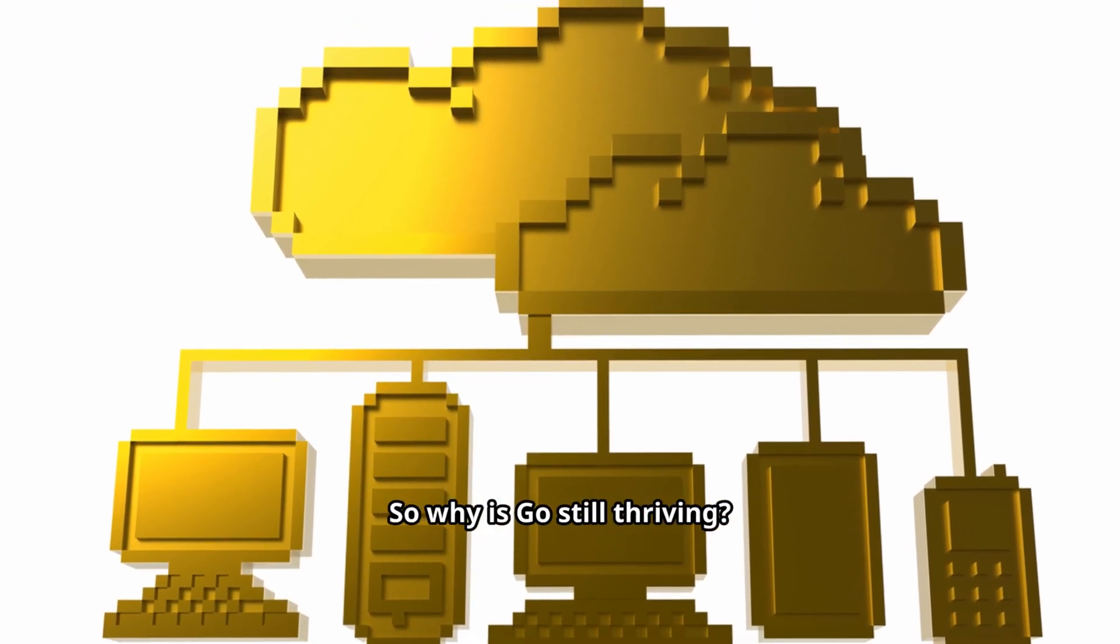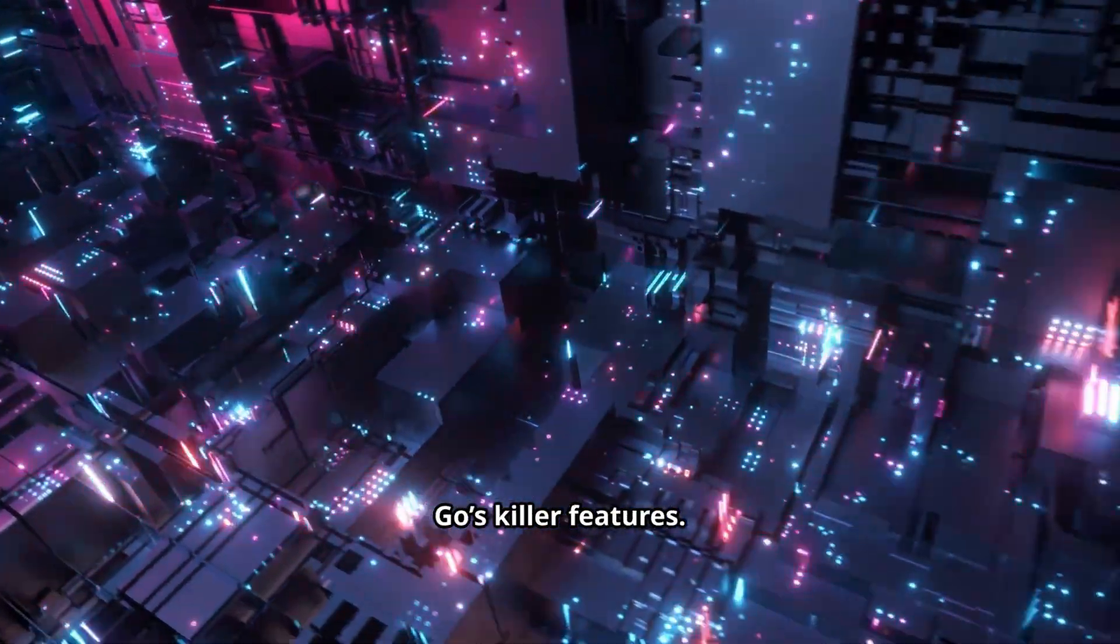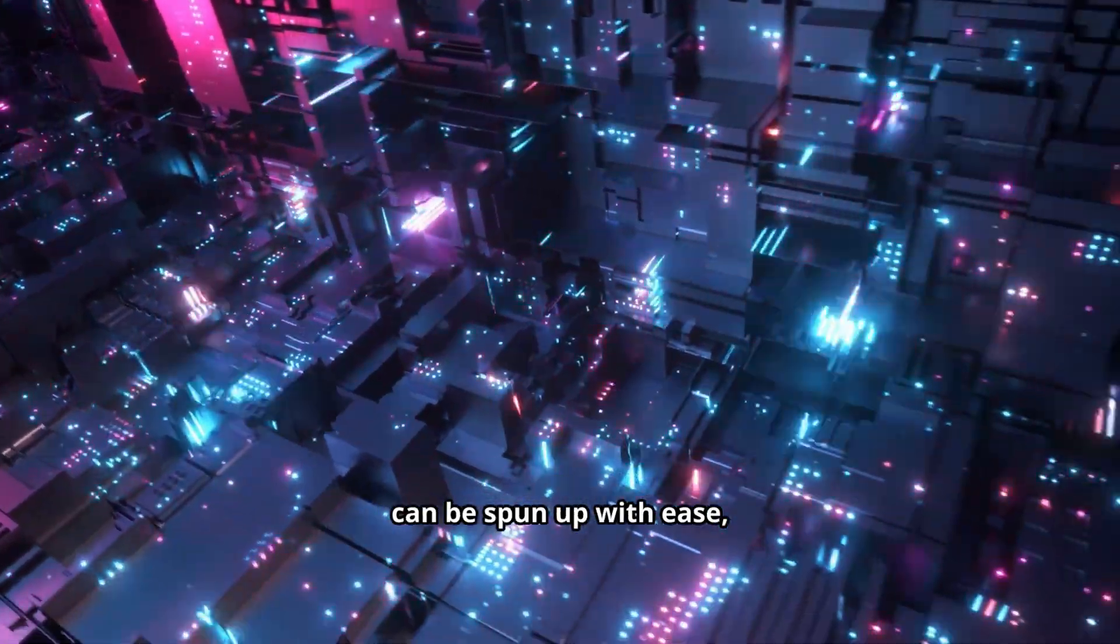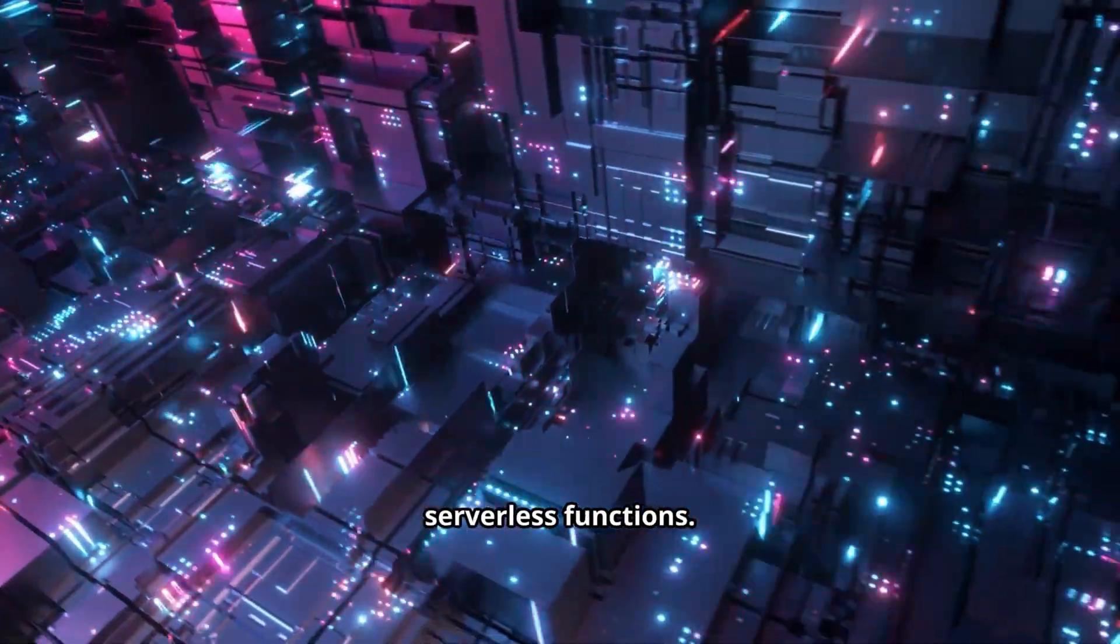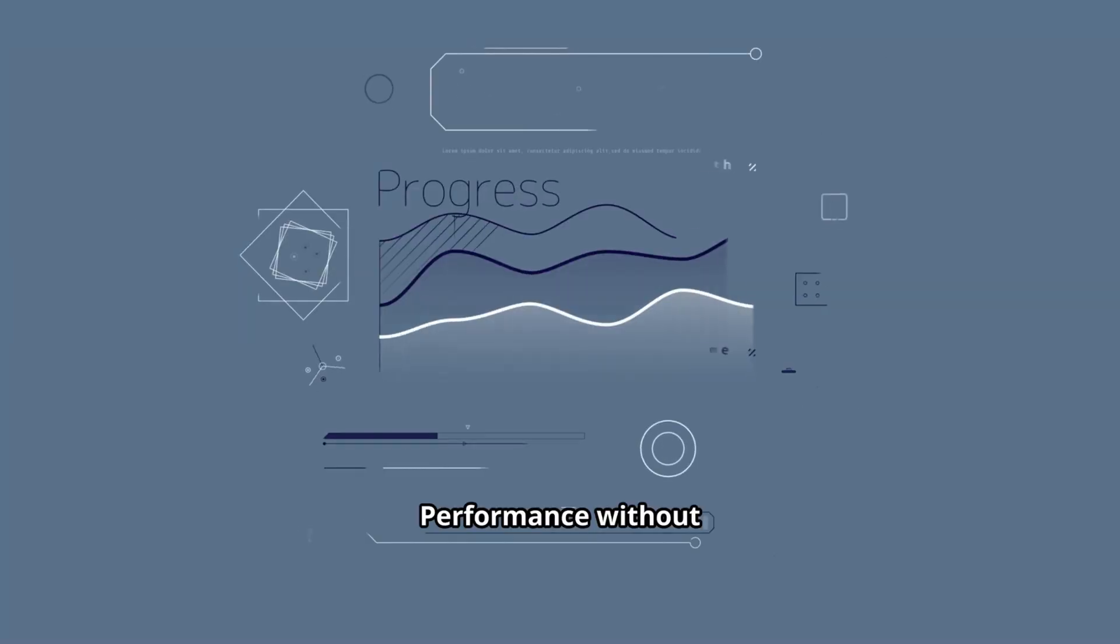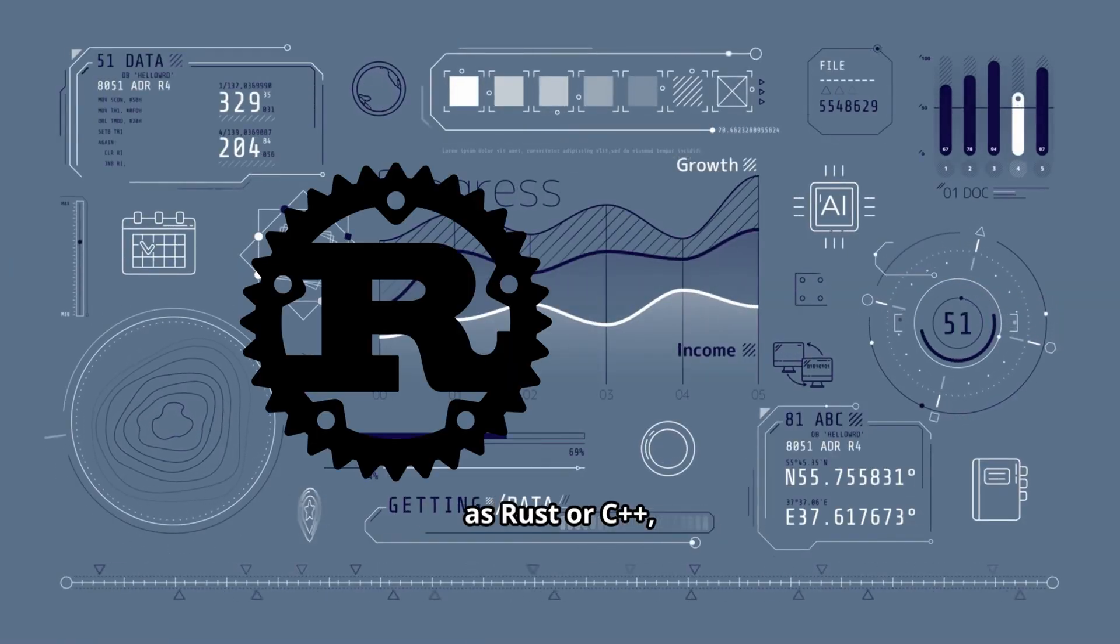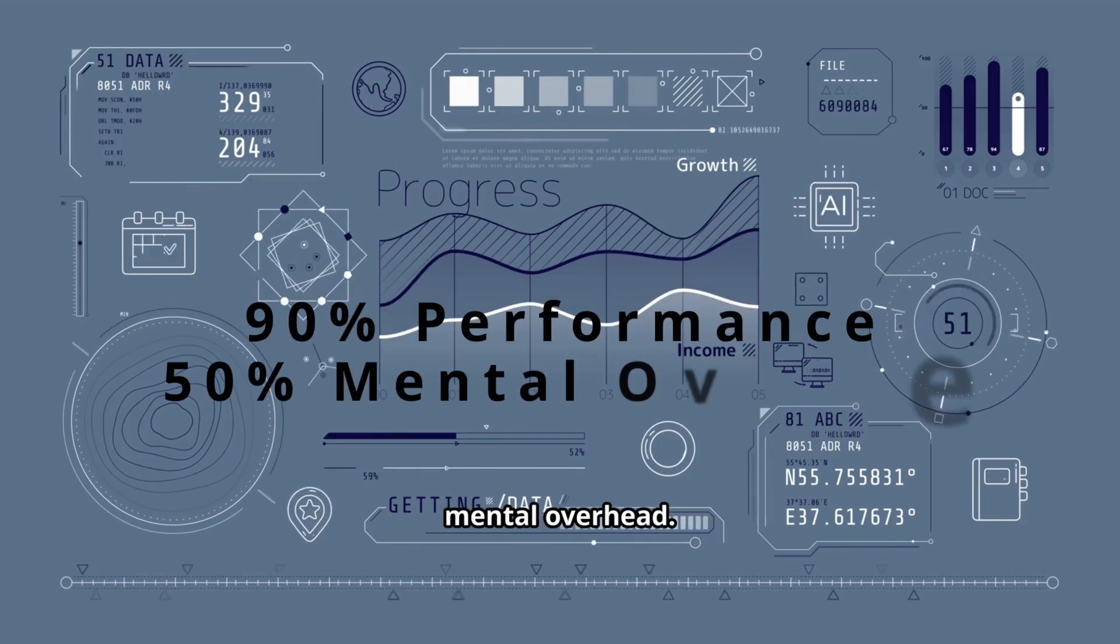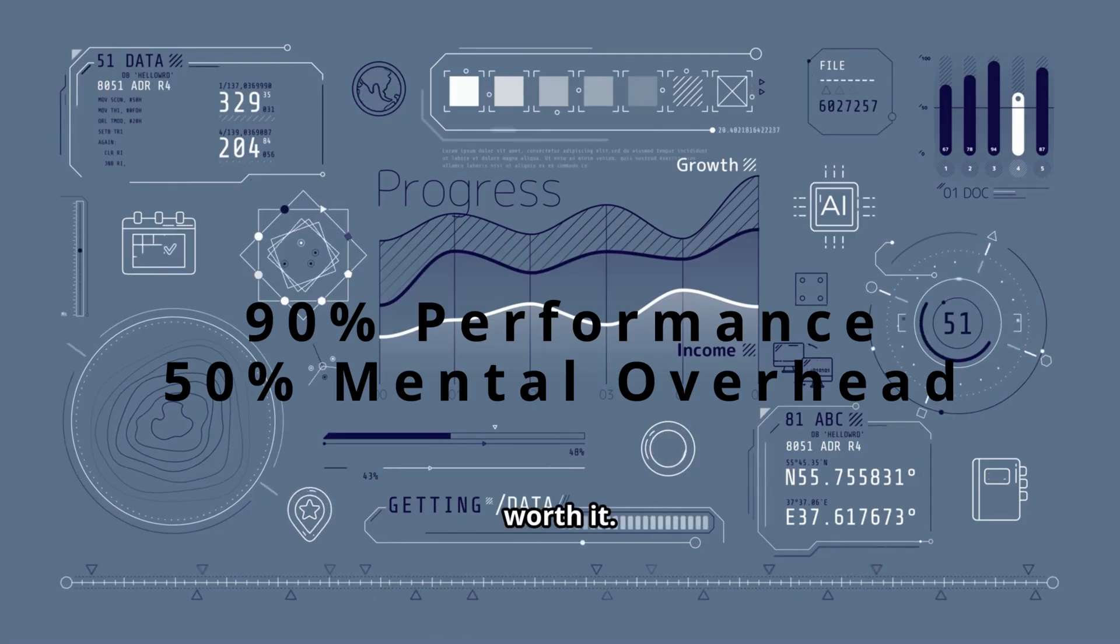Concurrency at scale remains one of Go's killer features. Millions of lightweight threads can be spun up with ease, perfect for handling real-time data streams and serverless functions. Performance without complexity is another. While not as fast as Rust or C++, Go hits the 90% mark with 50% of the mental overhead. For cloud workloads, that trade-off is worth it.